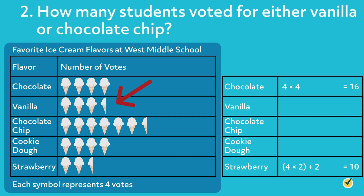How many students voted for either vanilla or chocolate chip? Start by finding the total number of votes for each flavor. Recall that each symbol equals 4 votes and each half symbol equals 2 votes. Let's start with vanilla, which has 3 whole symbols and 1 half symbol. To find the total votes for vanilla, multiply each whole symbol by 4 and add 2 to the product for the half symbol. 3 times 4 equals 12, and 12 plus 2 equals 14. Therefore, there are 14 votes for vanilla.